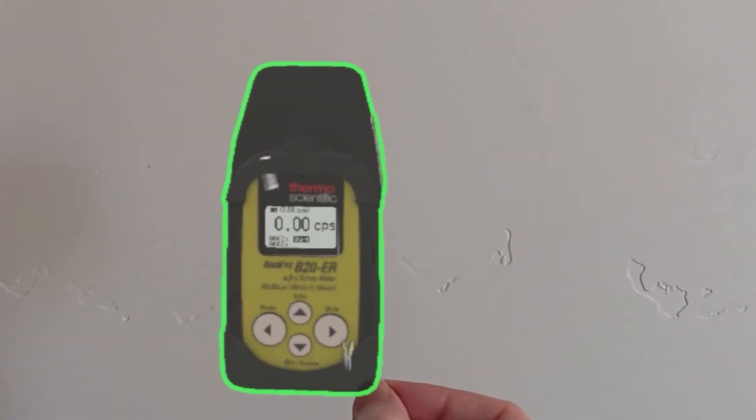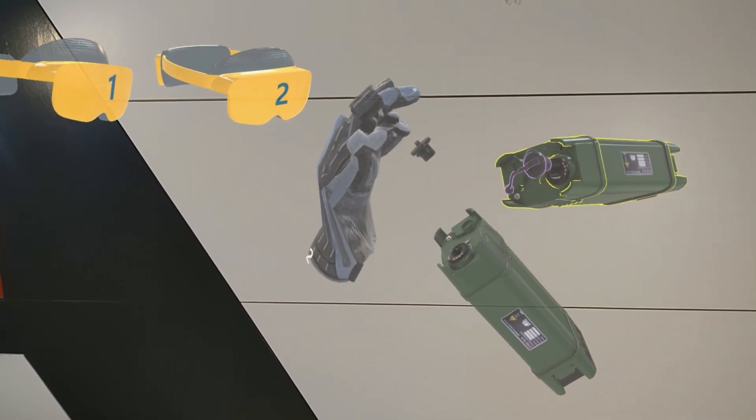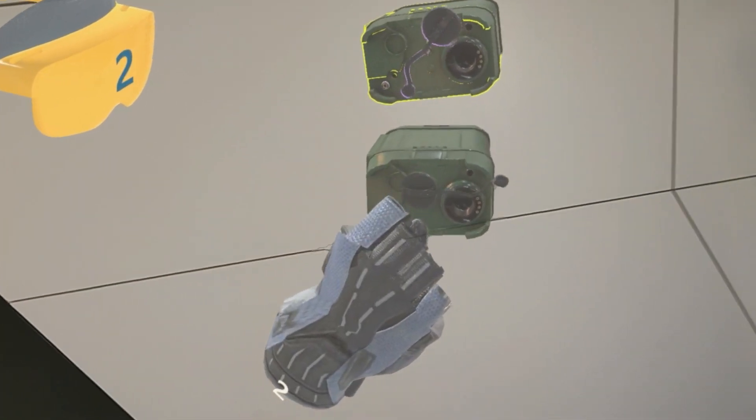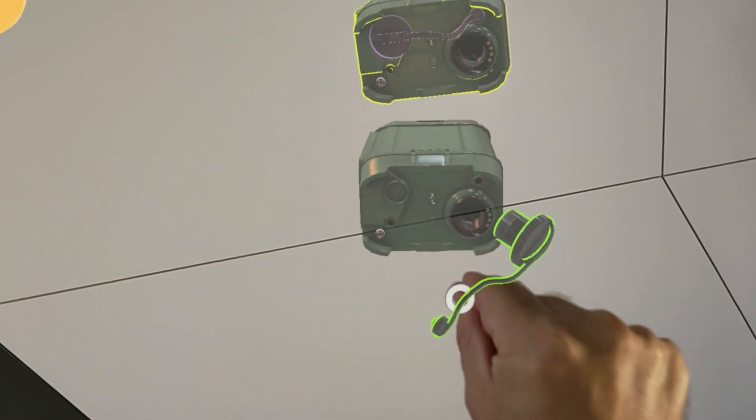In augmented reality, users have the option of training alone or in collaboration with others. Users can communicate with each other and interact with the same device in a virtual space, regardless of their proximity in the real world.